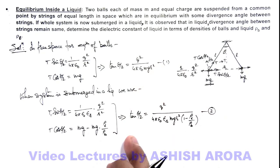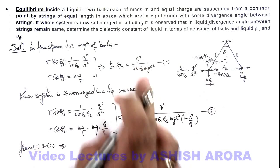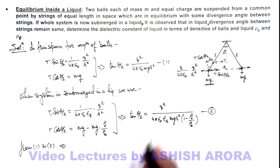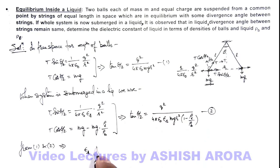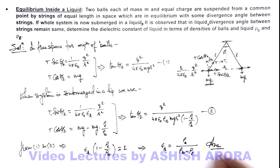Now if we equate these 2 equations, since in both cases the angle of divergence is the same, from Equations 1 and 2 we can directly write: most of the terms cancel out and the only term left is epsilon-r multiplied by (1 minus ρ-liquid over ρ-ball), and that should equal unity. If we further simplify, we get the value of dielectric constant in terms of the densities: epsilon-r = ρb divided by (ρb minus ρl). That is the answer for this illustrative situation.